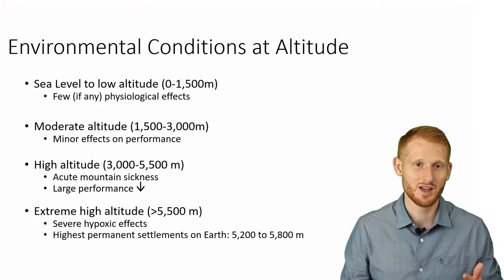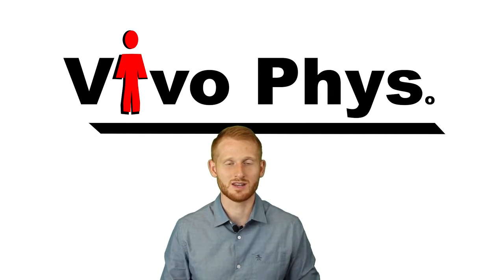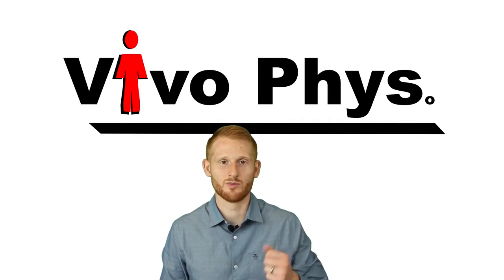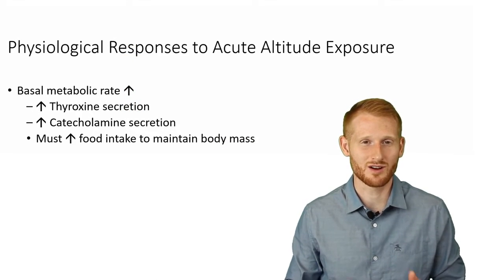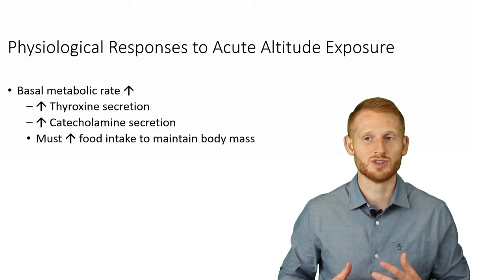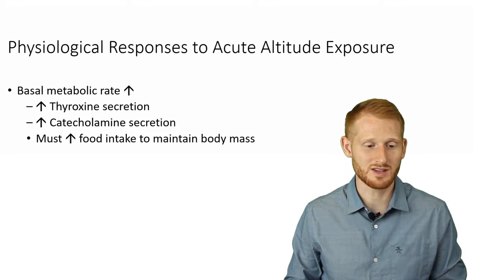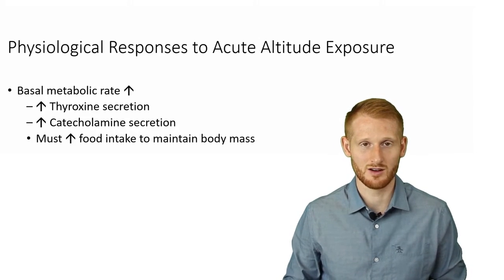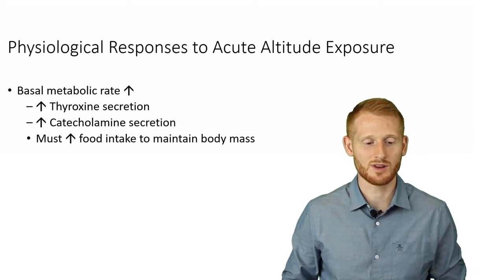When we go up to altitude acutely — meaning right now, going from sea level to the top of a mountain — what would we feel for the next few hours to days? We'd have an increase in basal metabolic rate, which is our resting metabolic rate — how much energy we use just sitting and doing nothing. This is due to an increase in thyroxine from the thyroid gland and catecholamines from the sympathetic nervous system being released in higher quantities.